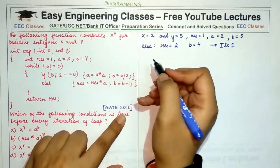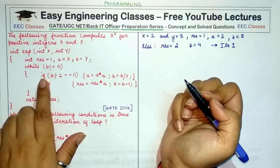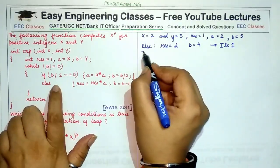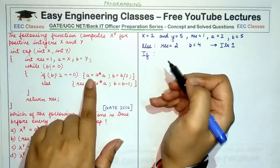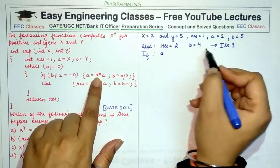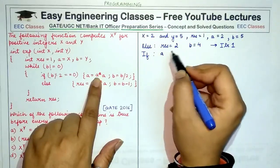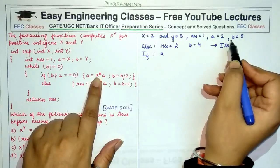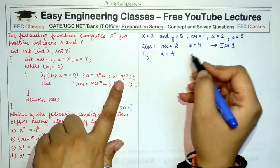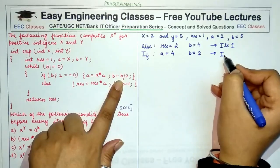In iteration 2, we re-enter the loop since b is not equal to 0. The if condition checks b modulo 2 equals 0 — yes, b is 4. So we enter the if condition and change the value of a. A was unchanged in the previous iteration and is still 2, so a becomes a × a = 2 × 2 = 4. B's value is changed to half of 4, which is 2. This completes iteration 2.